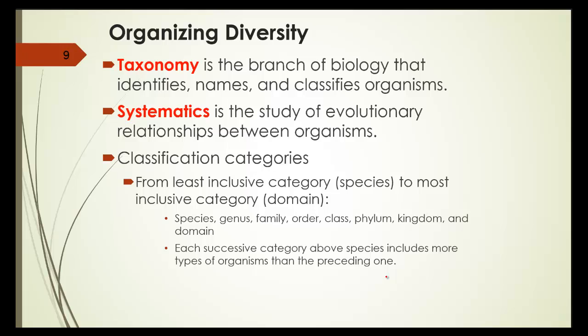Classification categories from the least inclusive category of species to the most inclusive category domains are species, genus, family, order, class, phylum, kingdom, and domain. Remember, domain is the most encompassing while species is the most specific. Each successive category above species includes more types of organisms than the preceding one.